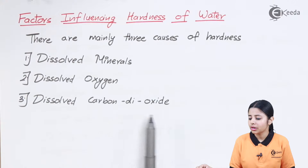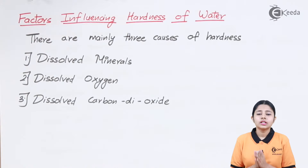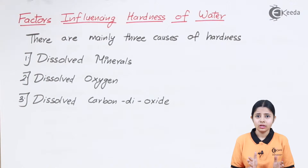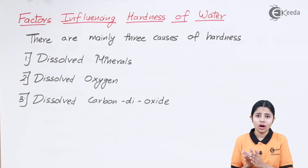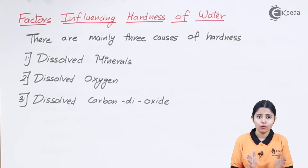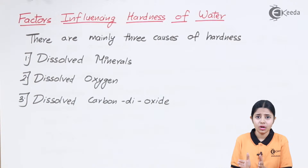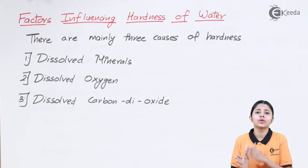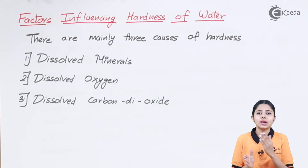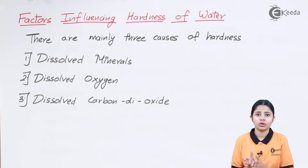The last factor is dissolved carbon dioxide. Dissolved CO2 is not desirable in hard water, and that is why when we convert hard water into soft water, there is a separate chamber or procedure specifically for removing dissolved CO2 — it is the last step of converting hard water into soft water.